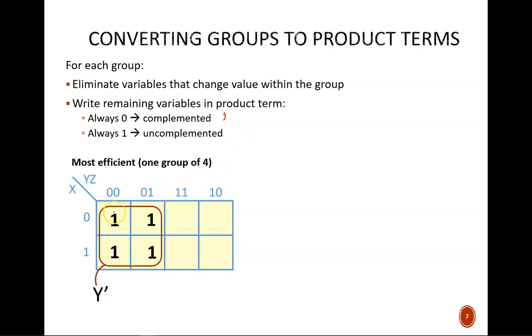I asked myself, does X change values within this group of 4? Well, for this square, X equals 0, and for this square, X equals 1. X does change values, so we drop it from the product term. Next, does Y change values within this group? No matter which square I look at, Y always equals 0. Therefore, Y will be part of the product term. Should it be written as Y or Y'? Since Y equals 0, then it is Y'.